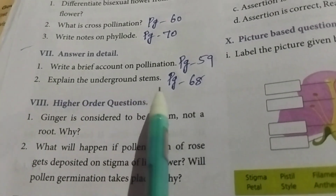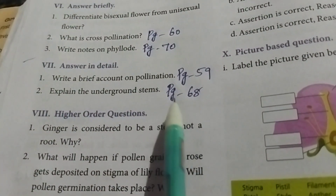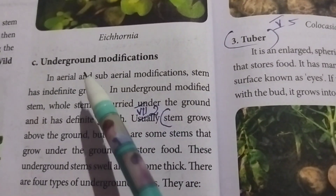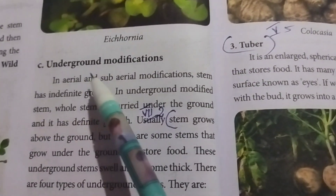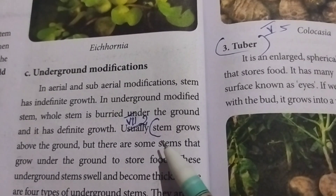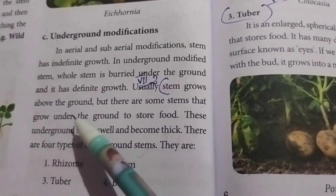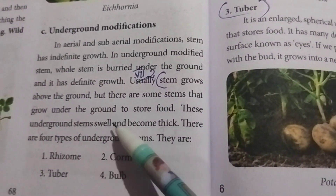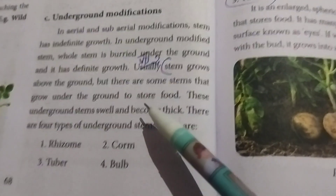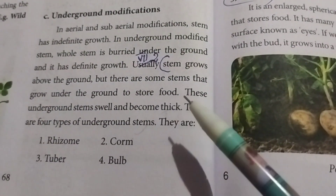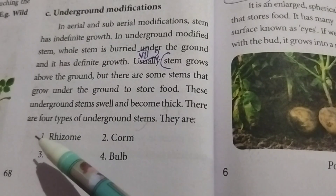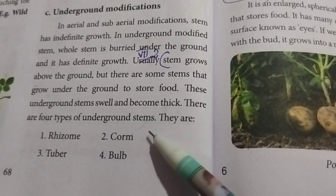Second question: Explain the underground stems. Referring to page number 68. Stem grows above the ground, but there are some stems that grow under the ground to store food. These underground stems swell and become thick. There are four types of underground stems: Rhizome, Corm, Tuber, and Bulb.